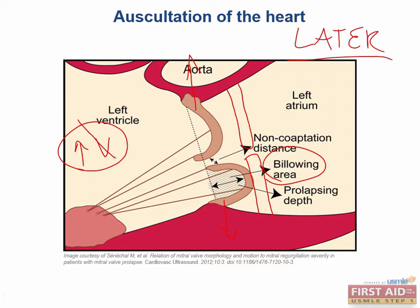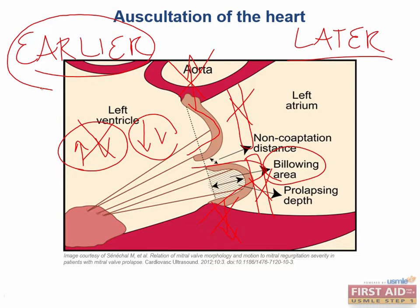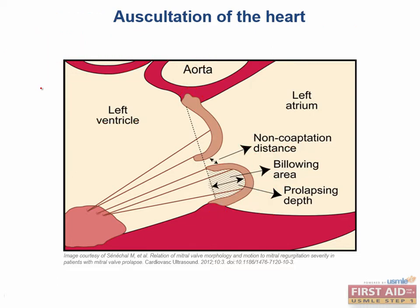If we decrease the volume or decrease the preload, the click will occur earlier in systole. Without distension of the chamber, the valve leaflets bunch up and become more redundant — even more so than normal — making them incredibly easy to billow up. This means the click occurs earlier in systole. So increases or decreases in preload change venous return, and hand grip increases afterload.